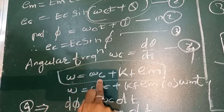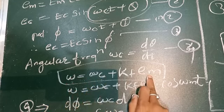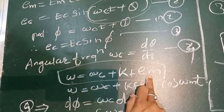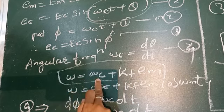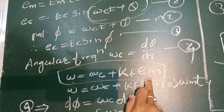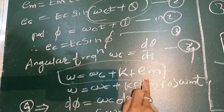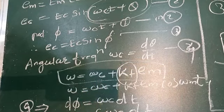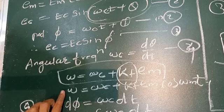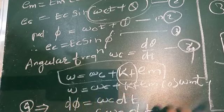In frequency modulation, what is changed is the carrier frequency according to the modulating signal. The frequency of the carrier is changed according to the modulating signal. So the instantaneous frequency is: ω = ωc + kf · em, where kf is a constant. This is Equation 4: ω = ωc + kf · Em cos(ωm t).